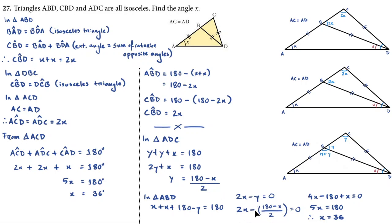Substituting Y equals (180 minus X) divided by 2 into 2X minus Y equals 0: 2X minus (180 minus X)/2 equals 0. Simplifying gives 4X minus 180 plus X equals 0, so 5X minus 180 equals 0, meaning 5X equals 180, and X equals 36 degrees — the same answer confirmed by all three methods.